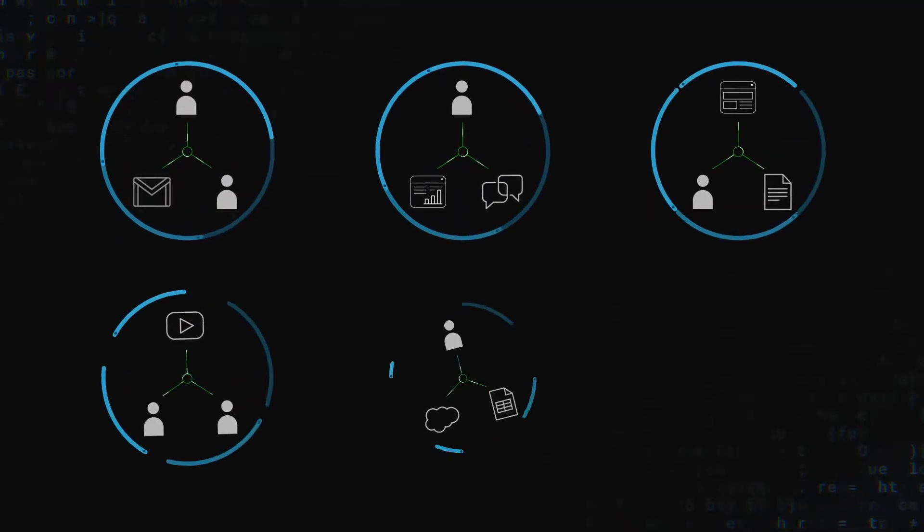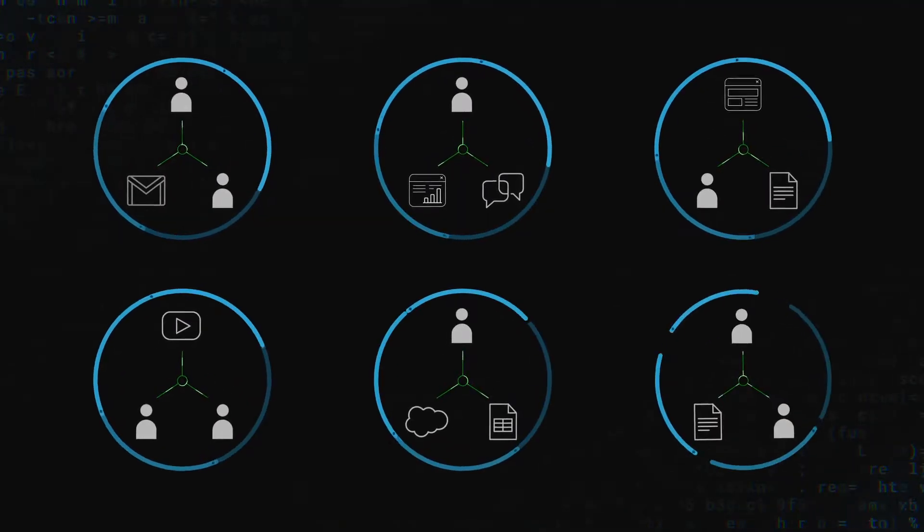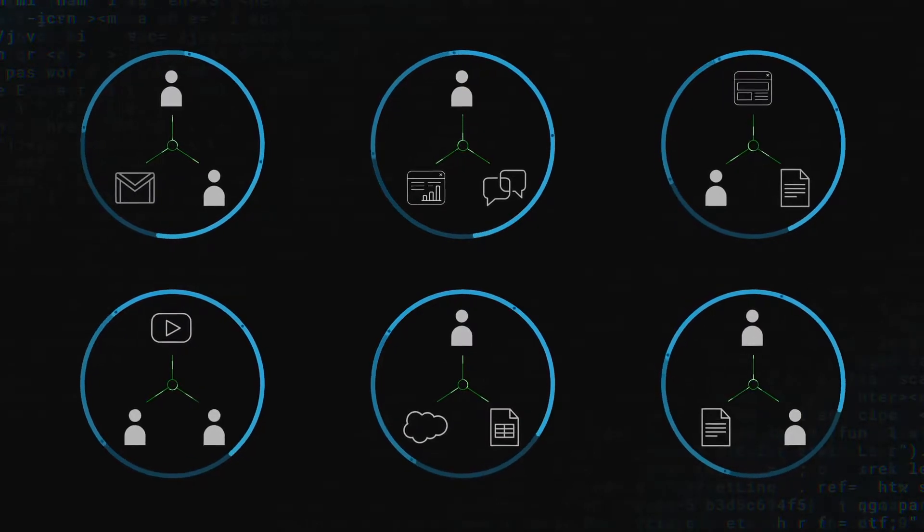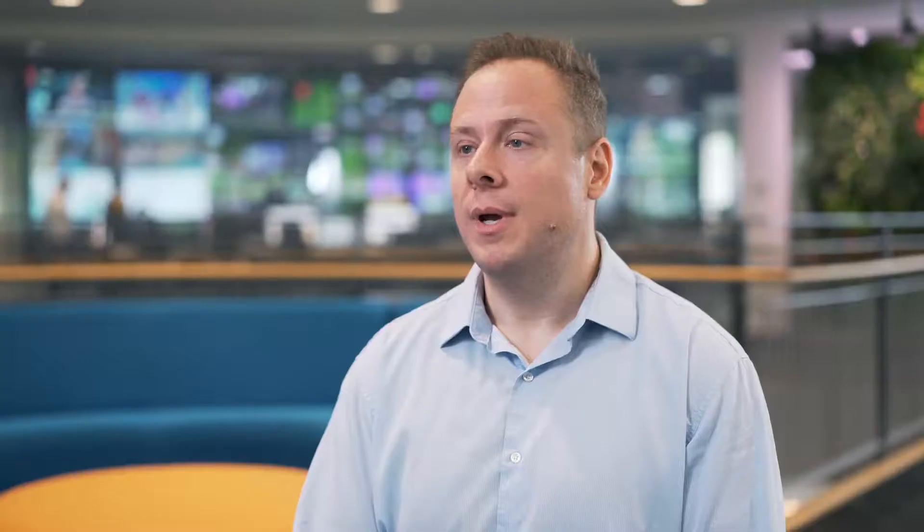You may already be familiar with some forms of zero trust. Micro-segmentation, for example, is one way of getting closer to a zero trust profile. Micro-segmentation is simply dividing assets inside of your network and controlling access between them.